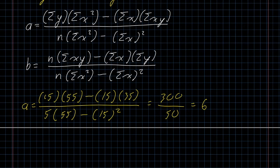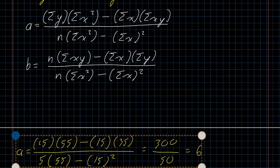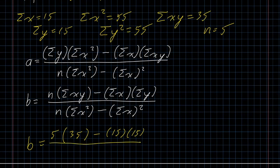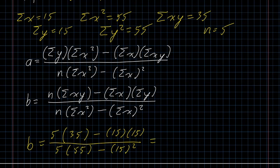I'm just going to slide this formula out of the way so that I have enough room to calculate B using the same process. B is going to be 5 times 35 minus 15 times 15, all over 5 times 55 minus 15 squared. My calculator is happy to do the calculation in the numerator, which is negative 50, and the calculation in the denominator, which comes out at positive 50. So all told here, minus 1.